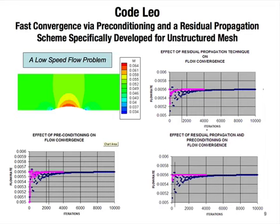This problem is also very important for low speed flows. For the density-based method, at low speed down to Mach 0.005, you generally cannot get a solution because the acoustic wave speed is much faster than the convection speed.